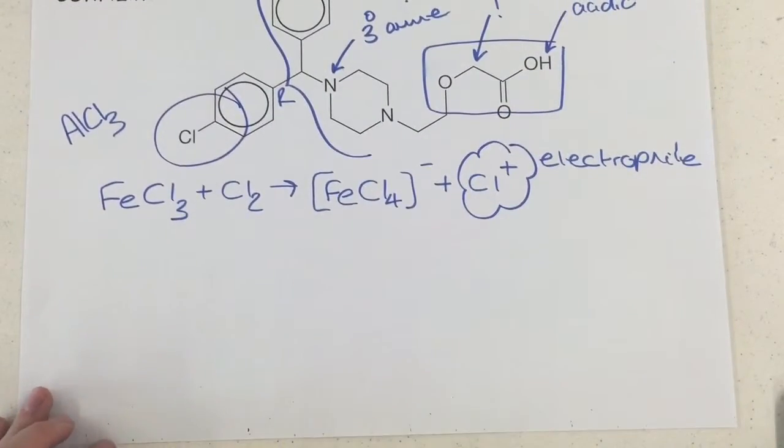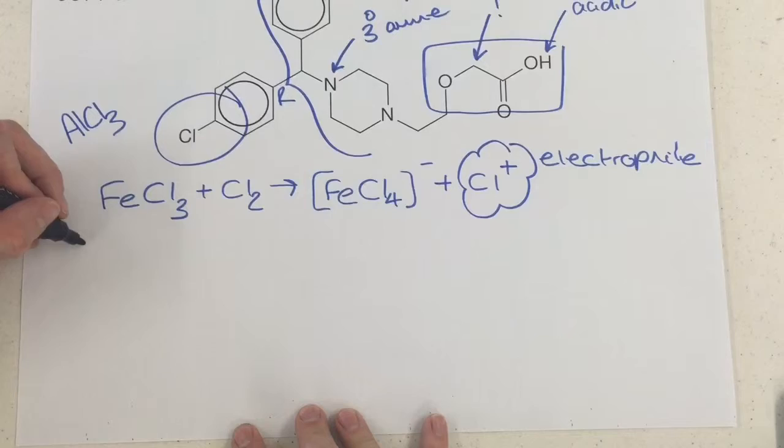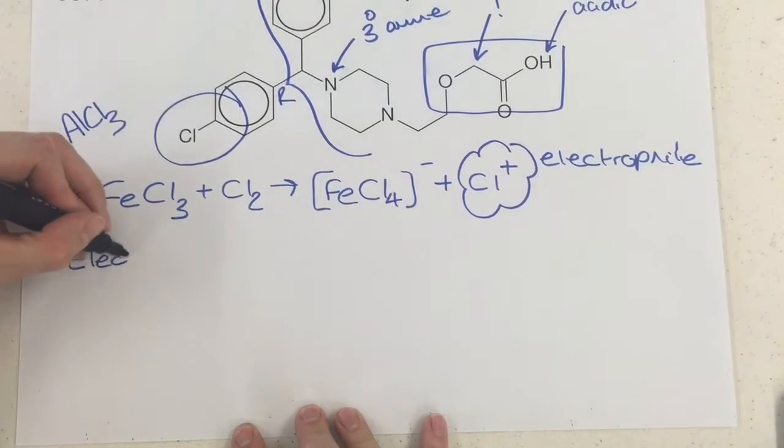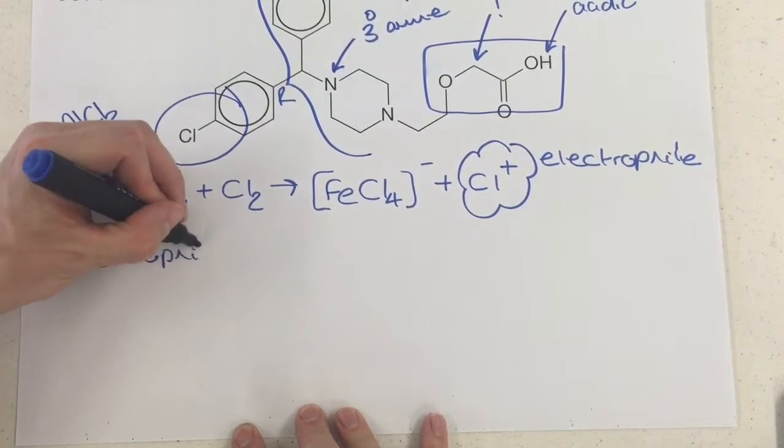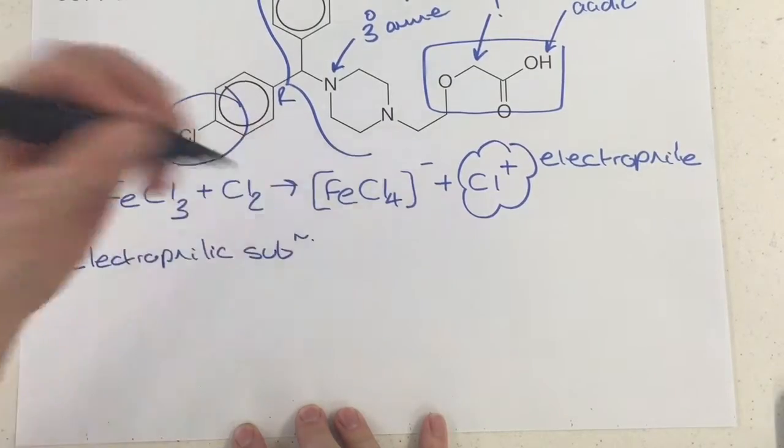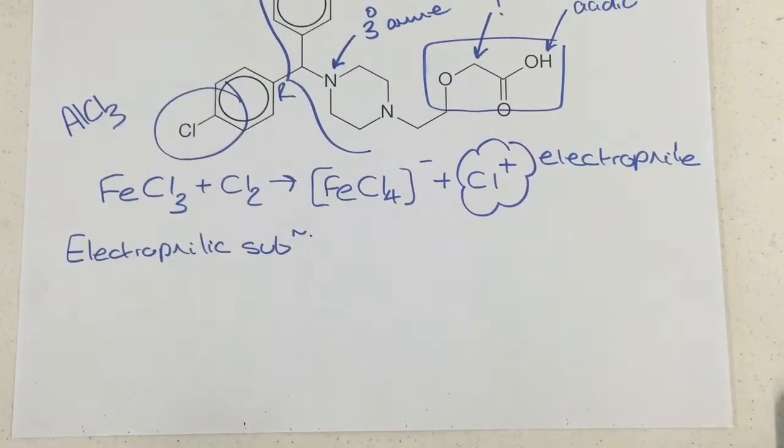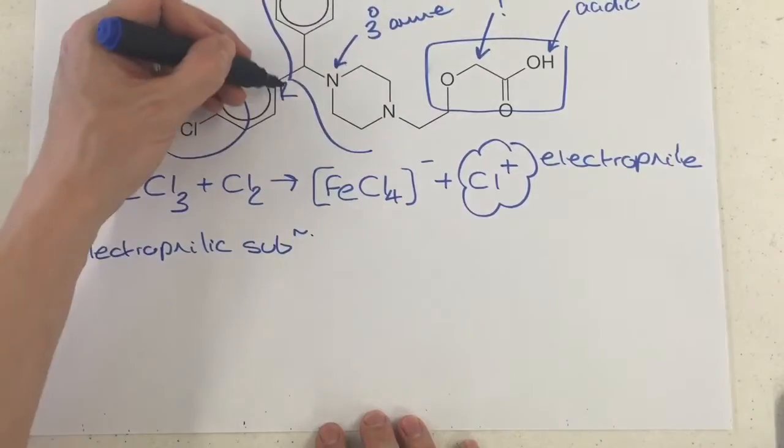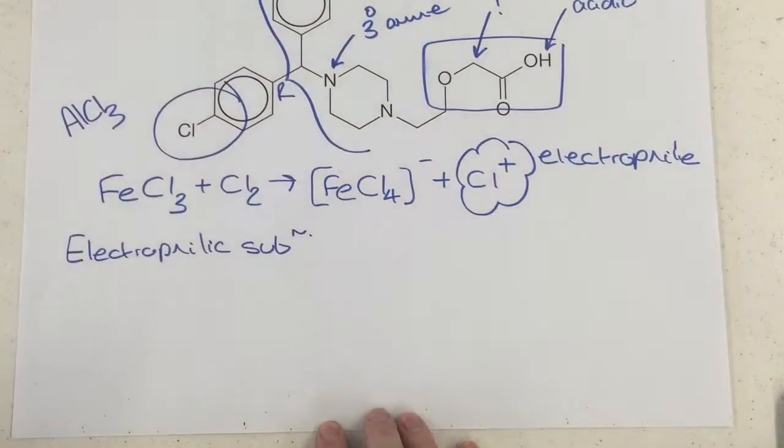You might think that makes things easier, but you have to show a really specific intermediate in the electrophilic substitution mechanism as a result of now knowing that the R group has got to be across from the chlorine.